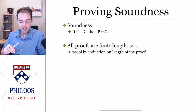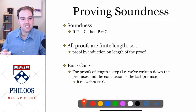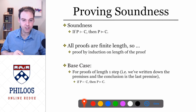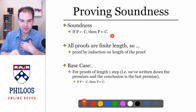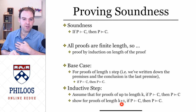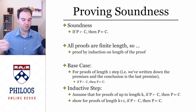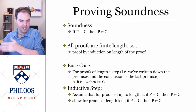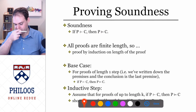So proving soundness: all proofs are finite length, and we do mathematical induction on the length of the proof. The base case: for proofs of length 1, if P proves C then P entails C. The inductive step: assume it works for proofs up to length k, and show it works for proofs of length k+1. Since any proof must have some length, and we've shown it works for proofs of any length, it must work for every proof. That's how we'll show that no matter what the proof is, if P proves C then P entails C.